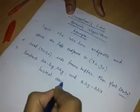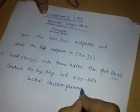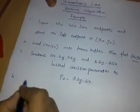In this session we will see Bresenham's line drawing algorithm with an example. First, we get the input — the two line endpoints — and store the left point in X-naught and Y-naught. Next, we load X-naught, Y-naught into the frame buffer and plot that point. Then we find the constant values: ΔX, ΔY, 2ΔY, and 2ΔY minus ΔX. Next, we calculate the initial decision parameter P-naught equal to 2ΔY minus ΔX.